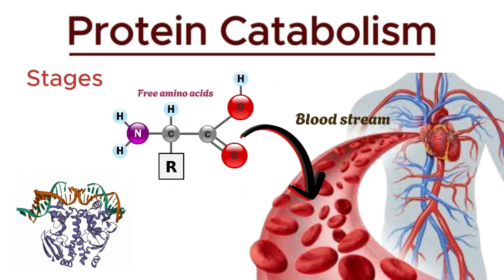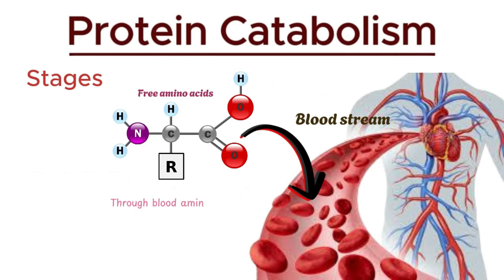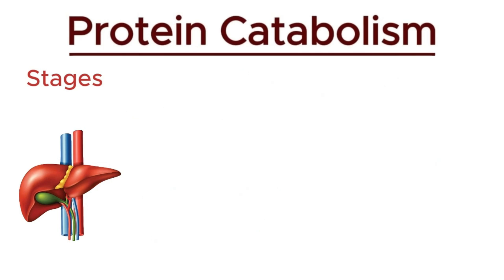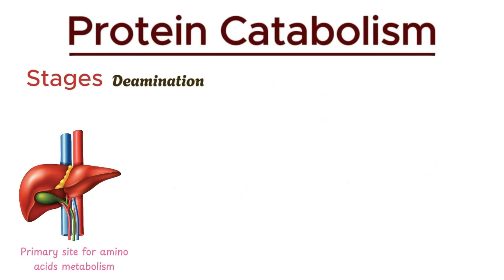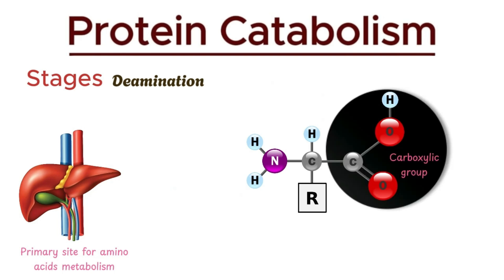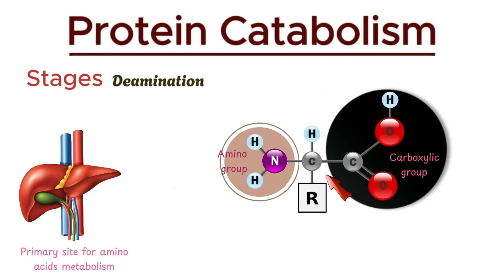These amino acids are then transported to various tissues, including the liver, which plays a central role in their metabolism. The liver is the primary site for the metabolism of amino acids, including a process known as deamination. If you examine the structure of an amino acid, you'll notice a carboxylic group on one side and an amino group on the other, attached to the alpha carbon.